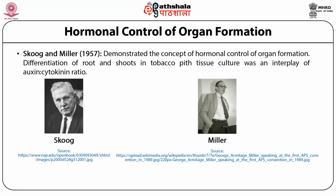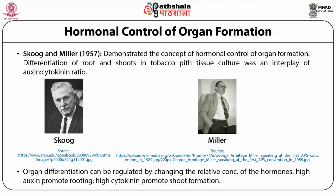Skoog and Miller put forth the concept of hormonal control of organ formation. In their classic paper in 1957 they reported that differentiation of roots and shoots in tobacco pith tissue was decided by the auxin to cytokinin ratio, and thus organ formation could be maneuvered by changing the relative concentration of the two growth regulators — higher concentration of auxin promoting root formation while higher level of cytokinin supporting shoot formation. It is worth mentioning that this is an interplay of both, and the endogenous level present in the tissue also plays an important role in how much exogenous growth regulator will be required. This concept of hormonal regulation of organogenesis is a reality today and has found application in a large number of plant species.